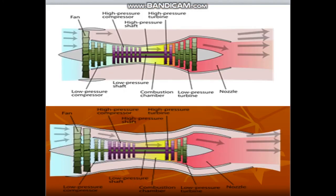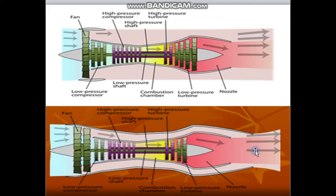As we see in this figure, the air will separate in two ways. The first flow will go by the bypass. The second will enter into the core of the engine. They will then mix together at the final stage of the exhaust nozzle and go to the atmosphere.